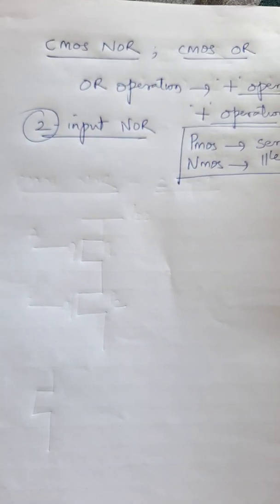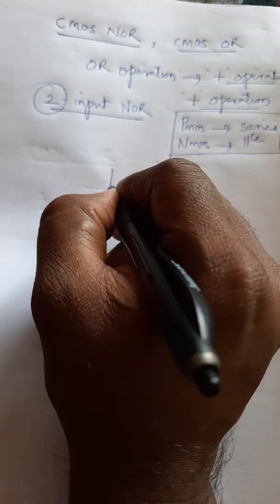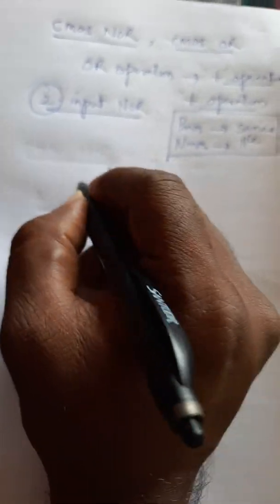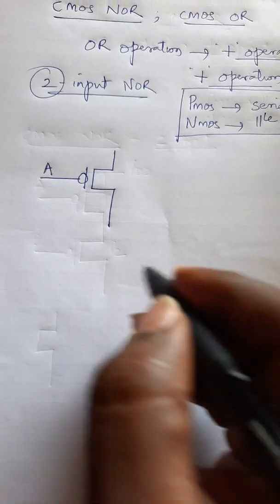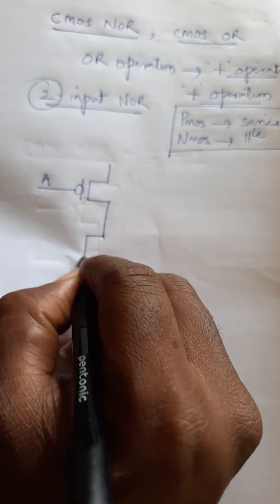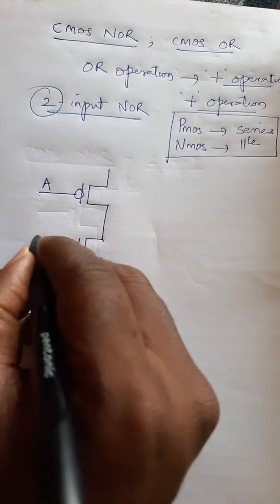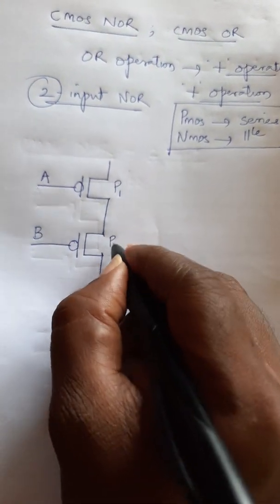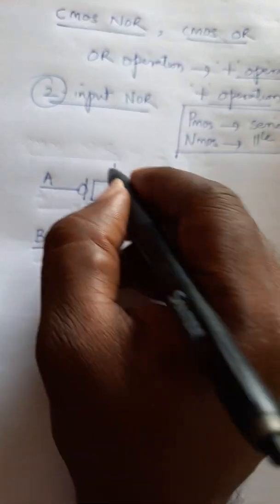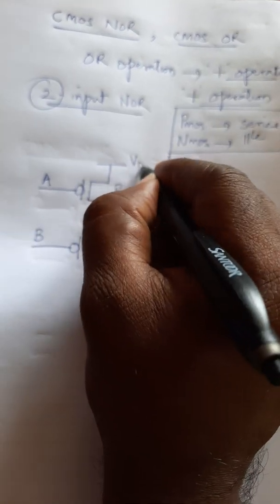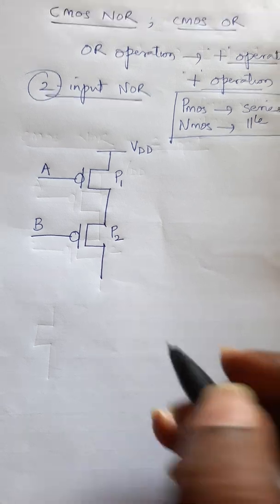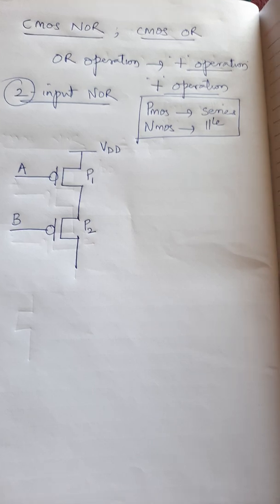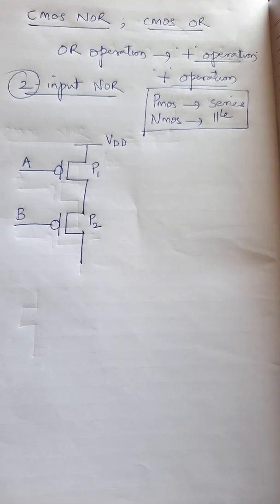Since it is a two-input gate, I will first take two PMOS. This is my first PMOS for input A, and that PMOS has to be connected in series with the second one. This is my second PMOS for input B. I will name them P1 for PMOS 1 and P2 for PMOS 2. The first PMOS should always be connected to the VDD power supply, and then connected in series to the second PMOS.